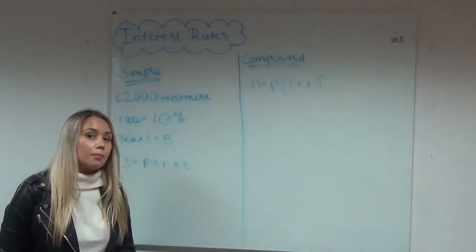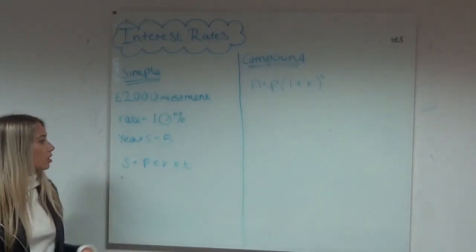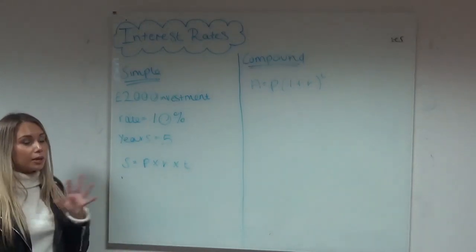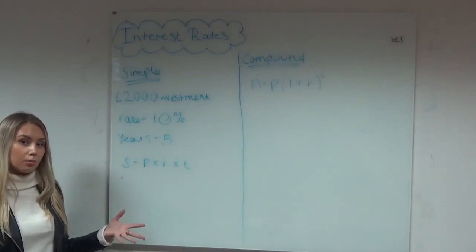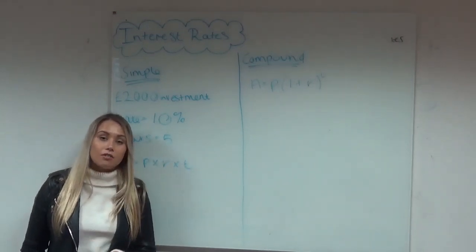So if we look at this example, there's going to be a £2,000 investment into the bank at a rate of 10% interest and for five years. We can plug all this information into the simple interest formula to work out how much interest is going to be earned over the five years.